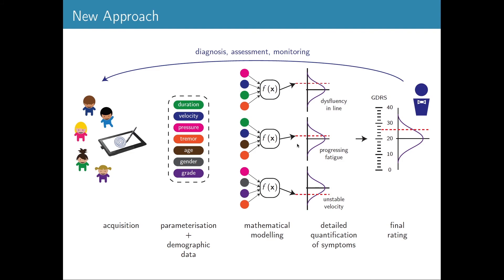To sum up, this is the concept we currently follow: we collect data using Wacom technology from children, perform parametrization, model each symptom individually, and quantify each symptom on a scale — providing a very detailed and complex profile of each child. We also calculate a global score, and all these inputs together help psychologists or other experts to perform more effective diagnosis, assessment, and monitoring.